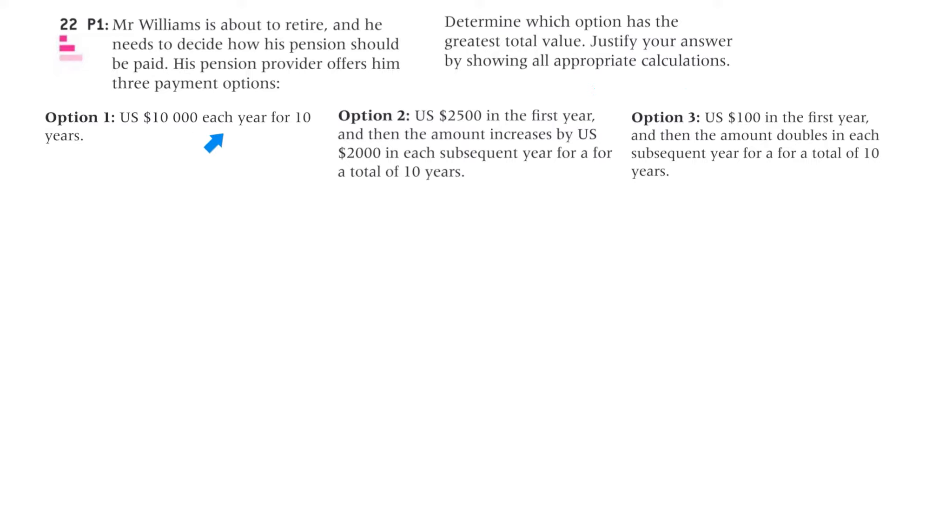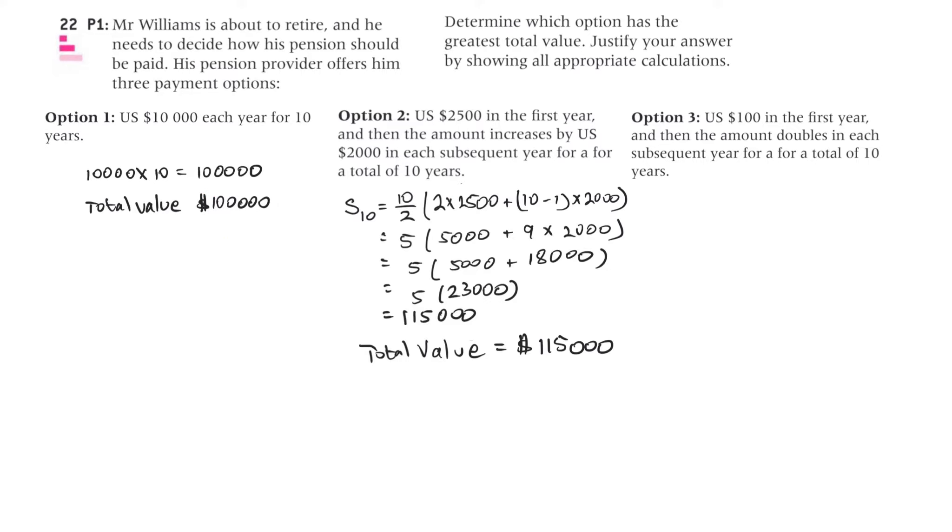Option 1, $10,000 US dollars each year for 10 years. So that's 10,000 times 10, that's 100,000. So the total value is 100,000. Option 2, that's 2,500 in the first year, and then the amount increases by US $2,000 in each subsequent year for a total of 10 years. This is clearly an arithmetic sequence, so we're going to use a summation general formula for an arithmetic sequence. So that's 10 years, and that's n on 2. So that's 10 on 2 times 2 times U1, which is our 2,500, plus 10 minus 1, n minus 1, times D, and D here is 2,000 because it's increasing by 2,000 each year. So that resolves itself to 115,000, so the total value is 115,000.